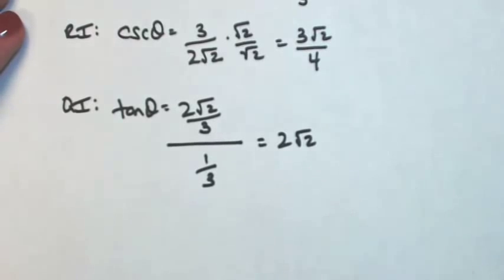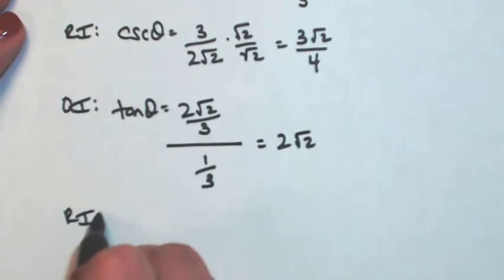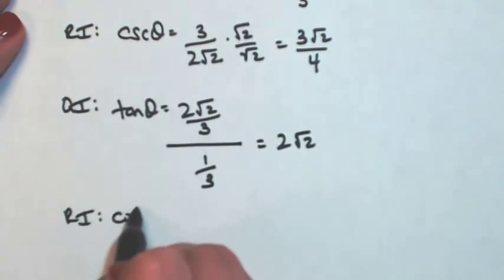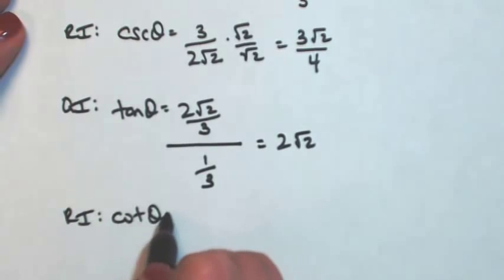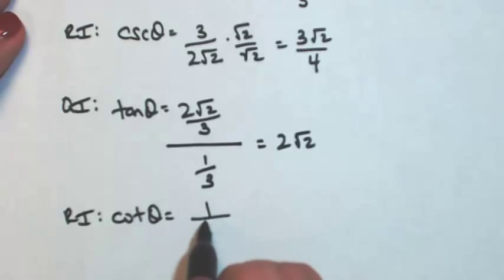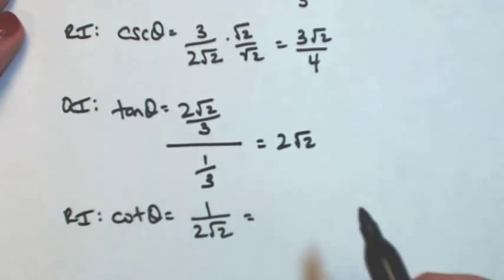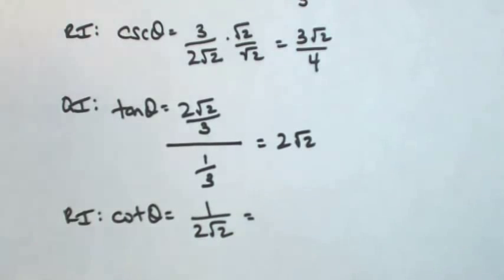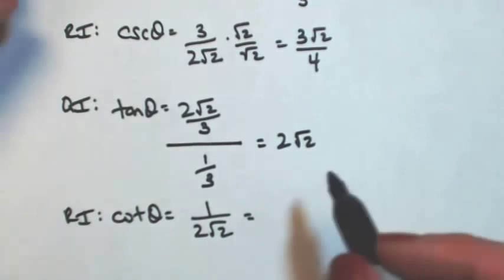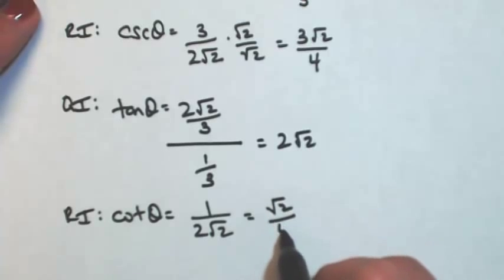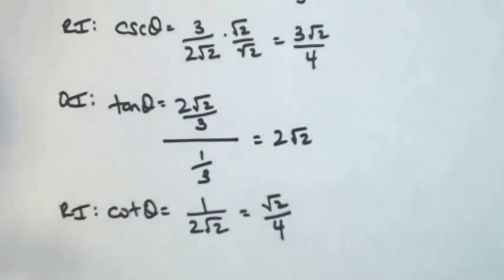I know tangent, so then I know cotangent, which is its reciprocal. Taking the reciprocal of tangent and rationalizing — and there are all six trig functions of theta.